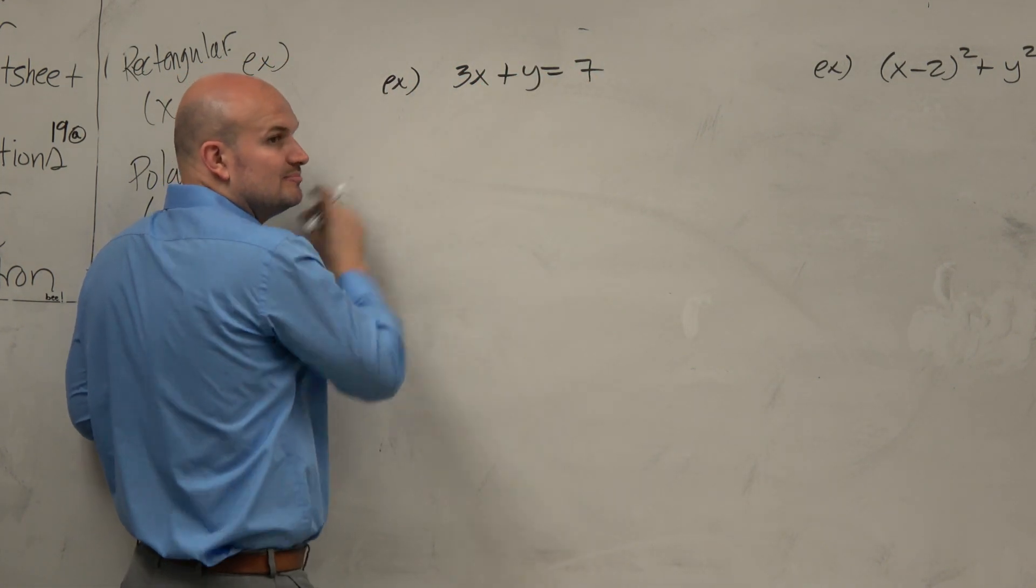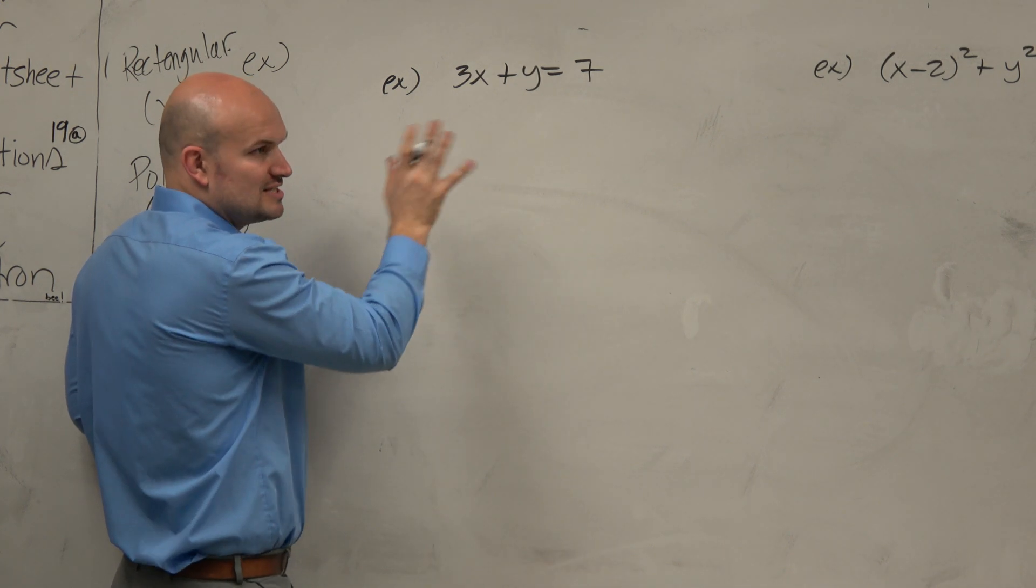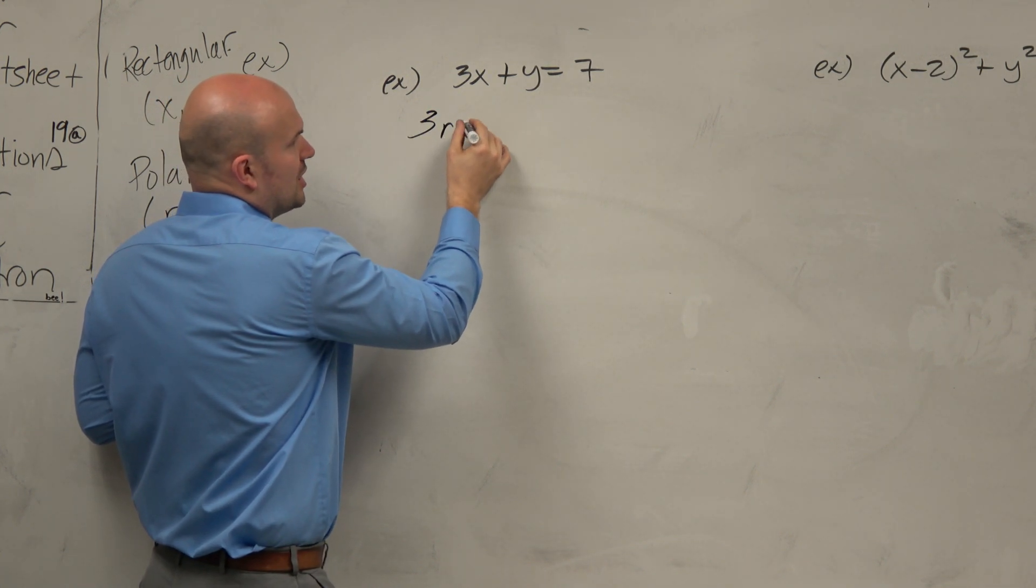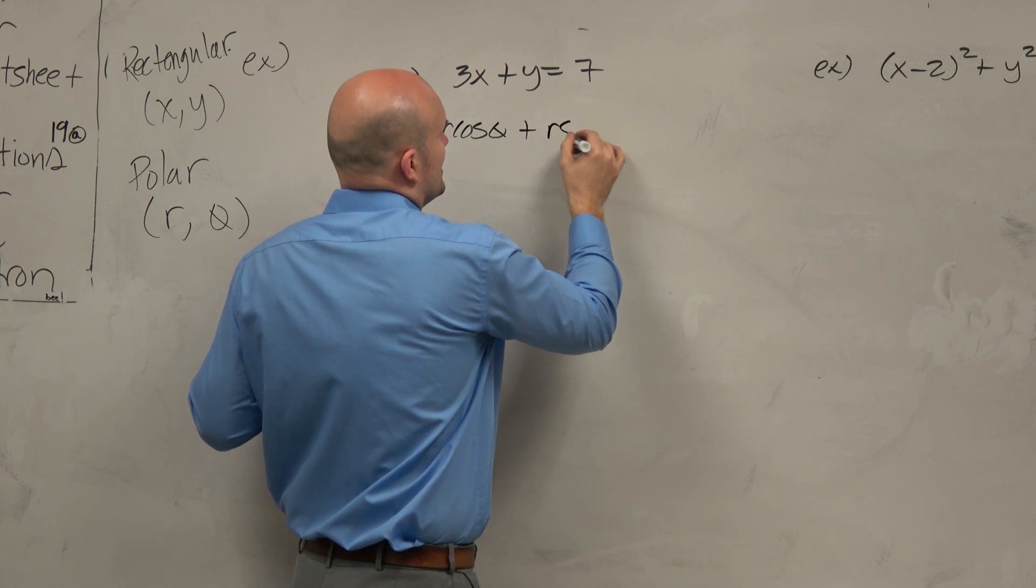So if I want to put this in polar form, I want everything to be in terms of r and theta. No more x and y's, just r's and thetas. So I'm going to replace x with r cosine theta, and y with r sine theta.